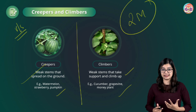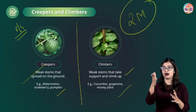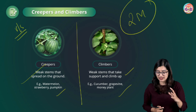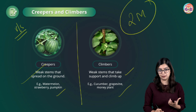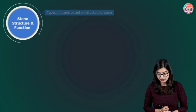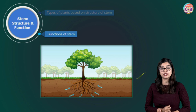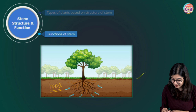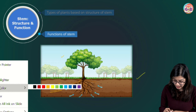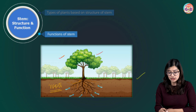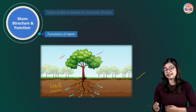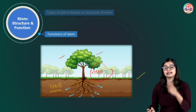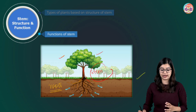The stem is the upright part that bears flowers, branches, fruits, and leaves. Stem also has important functions beyond structural support. One important function of stem is to help with transport — the roots absorb water and it needs to be transported all the way to the upper parts like the leaves. From the roots, water is transported to different parts through the stem. So the stem plays a very important role when it comes to transport.